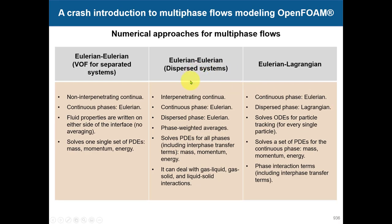For the dispersed system, you have interpenetrating continua where the phases mix — a continuous phase and a dispersed phase. Modeling is required here. Interestingly, you can also have phase inversion, where the phases switch roles. We use a phase-weighted average, similar to what is done in turbulence modeling. We solve a set of PDEs for every single phase, plus all the interfacial models — rather than one set of equations plus a tracking equation.